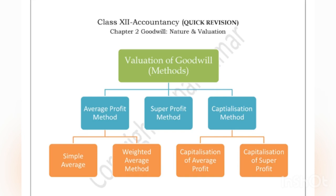There are three methods for valuation of goodwill: the first is the Average Profit Method, the second is the Super Profit Method, and the third is the Capitalization Method. The Average Profit Method has simple and weighted variants. We have also done two videos on Capitalization of Average Profit and Capitalization of Super Profit.